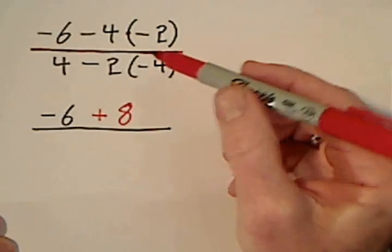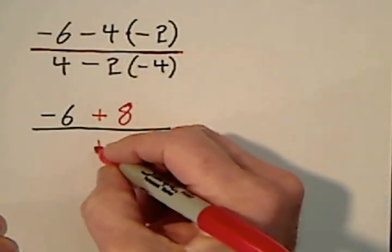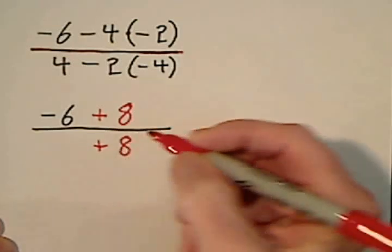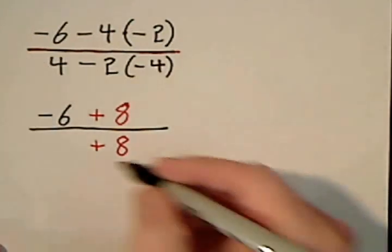I'll address the bottom right now. Negative 2 times negative 4 yields a positive 8. And we'll bring down whatever we haven't used. This 4 hasn't been used.